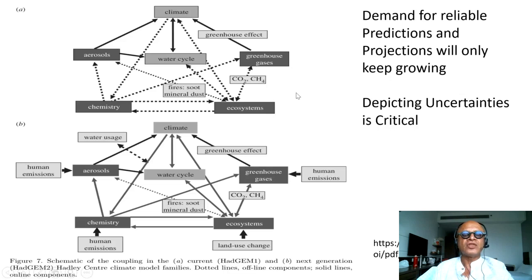We'll return to this in the context of the IPCC projections a little bit later on. But this is showing the schematic of coupling in the version of the Hadley Center's global environmental model, called version 1 and version 2. This is along the lines of the earth system model versus climate model. This model has climate, greenhouse effect, greenhouse gases budget, chemistry, ecosystems, fire, aerosols, water cycle, and so on.